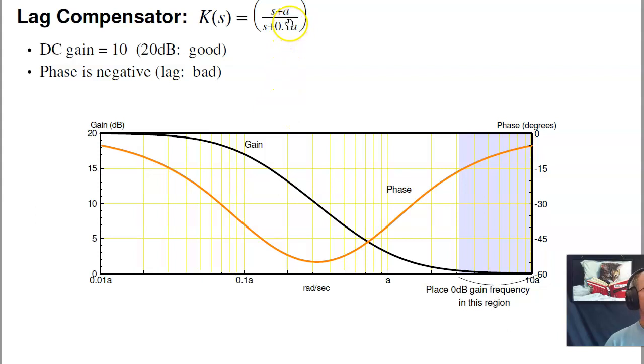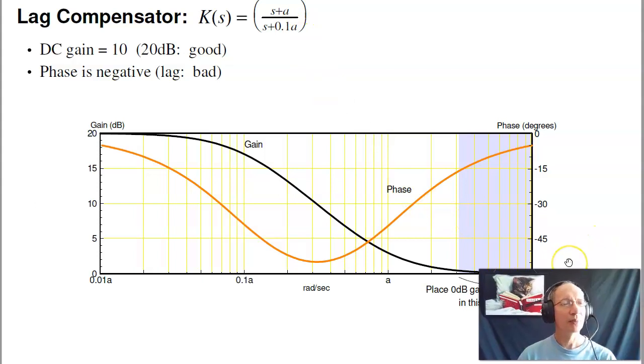If a is 0.01, it has a settling time of 400 seconds. Basically the lag compensator will kick in eventually. But depending upon where you put the zero, you might have to wait 40 seconds, 400 seconds, 4000 seconds.